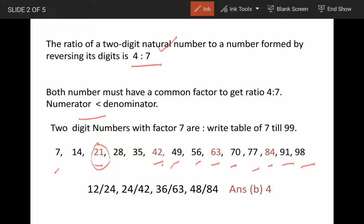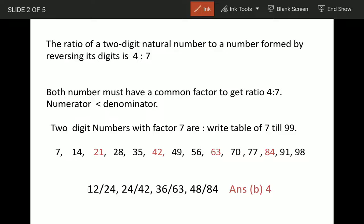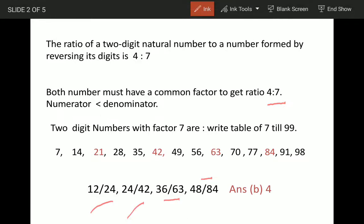In this manner, these are the four numbers we have identified: 12/24, 24/42, 36/63, 48/84. When we reverse the number, you will find the ratio comes to 4 is to 7. The numbers are 1, 2, 3, and 4. So answer is option B: 4.